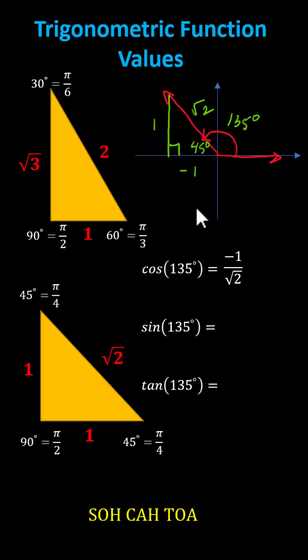If we are required to rationalize the denominator, we multiply the numerator and denominator by the square root of two, which gives us negative square root two divided by two. Notice square root two times square root two equals two.